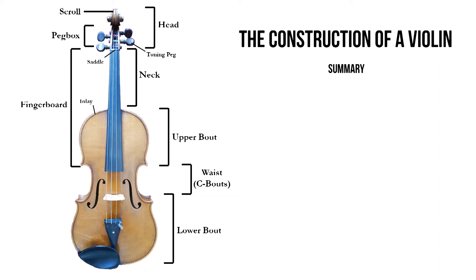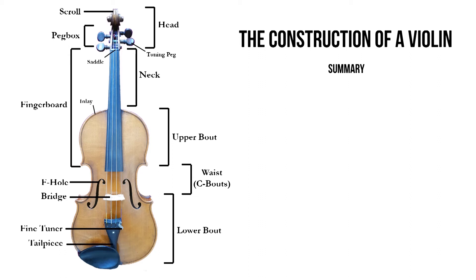Interestingly, the bridge has a weight of approximately 25 kg on the surface of the top of the violin — it's quite a lot. Here is a fine tuner. The other strings can also have fine tuners depending on the material of the violin strings. Here is the tailpiece.